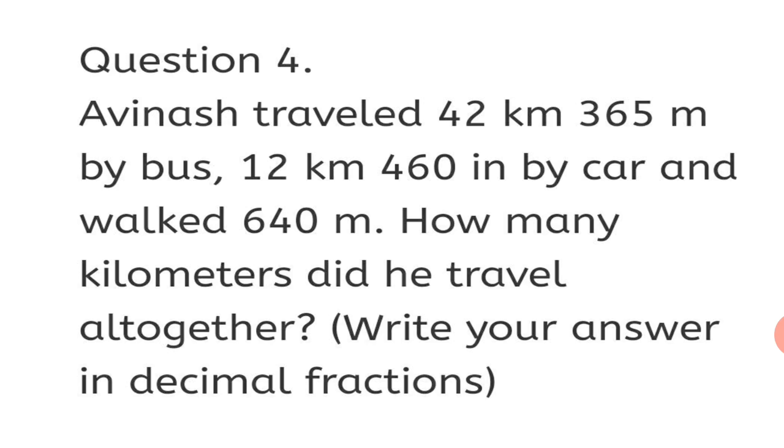Avinash traveled 42 kilometers, 365 meters by bus, 12 kilometers, 460 meters by car and walked 640 meters. How many kilometers did he travel all together? You have to write your answer in decimal fractions. So, what we will do? First, we will convert this kilometer meter in decimal number. That is, 42 kilometers, 365 meters can be written as 42.365 kilometers. So, that's what we are going to do for each and every fraction and then add them.